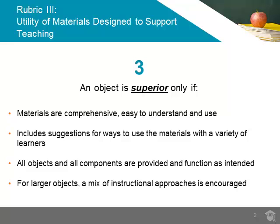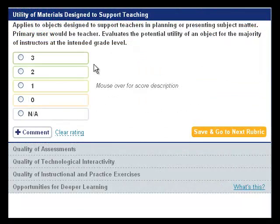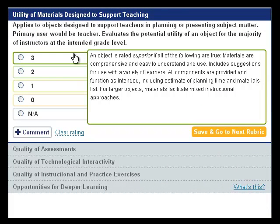An object could be rated superior, a 3 rating, only if all these statements are true: if the materials provided are comprehensive and easy to understand and use, if suggestions are included for how to use this material with a variety of learners, and if all components of the resource are provided and function as intended, including complete instructions as well as time and materials needed for the lesson. For larger objects like complete units, a mix of instructional approaches should be encouraged, such as a combination of direct instruction, group work, and individual investigation.